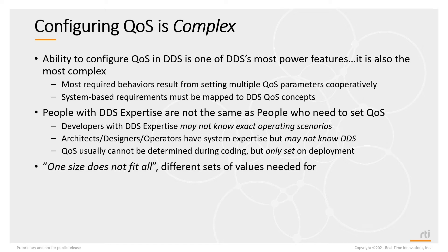One size does not fit all. You may need different sets of QoS values for different data streams or topics — not all topics behave the same. On deployment, the QoS for a topic may change because you're changing how the system is operating. You have different operating modes: initialization, a fast mode, a high-performance mode. Depending on the operating mode of the system, the QoS values may change.